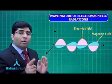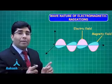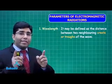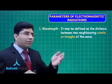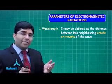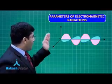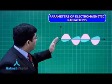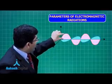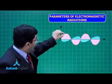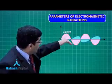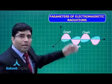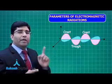To learn more about electromagnetic radiations, we need to know their parameters. The first parameter is wavelength. Wavelength is the distance between two consecutive crests or consecutive troughs. The maximum displacement traveled upward by the wave is called the crest, and the maximum distance traveled downward is called the trough. The distance between two consecutive crests is called wavelength.